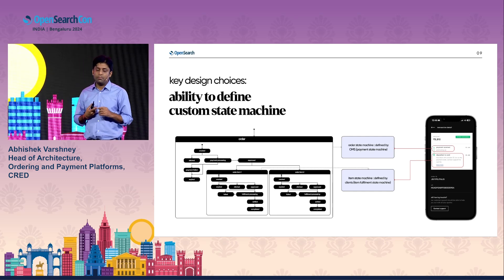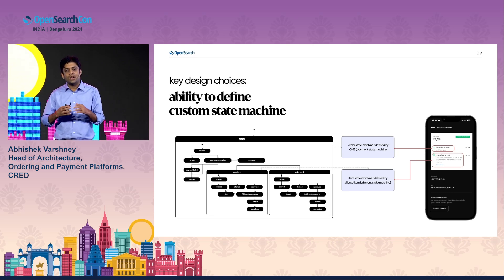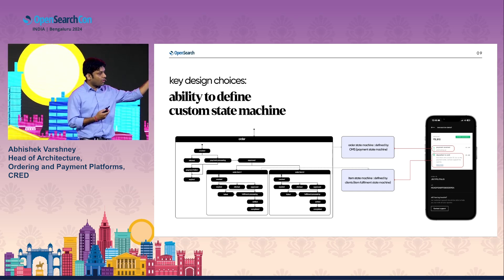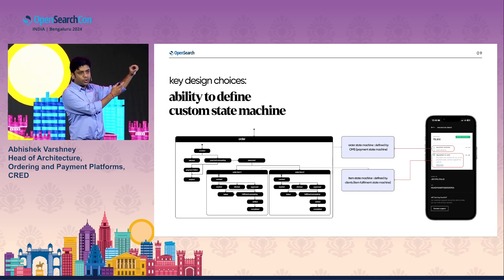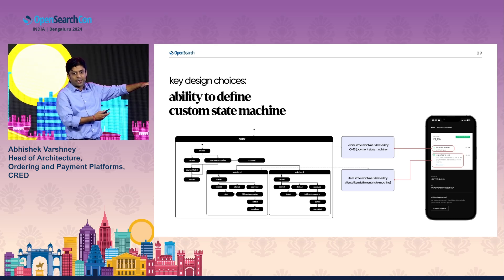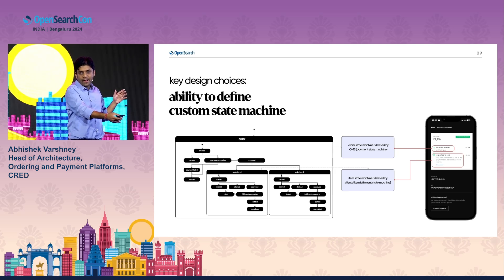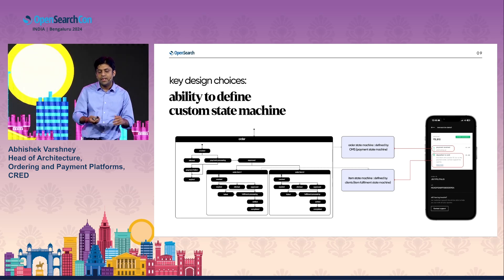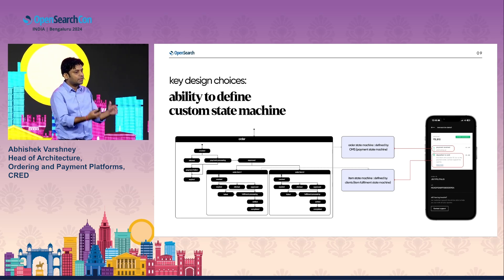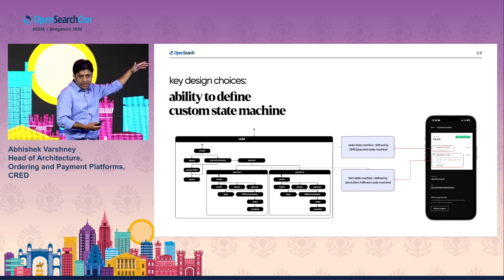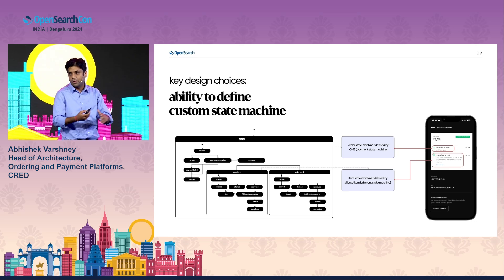The first design choice was to enable our clients to define custom fulfillment state machines. If you go to any order history detail on CRED, you would basically see two legs: one is the payment leg and then there is the fulfillment leg. The payment leg is defined by the payment state machine, which is handled by the platform itself — the OMS and the checkout platform. The fulfillment part varies from different business domains, so we empowered our clients to define their custom order item state machine. Once the payment state machine completes, the respective order item state machines could be triggered.